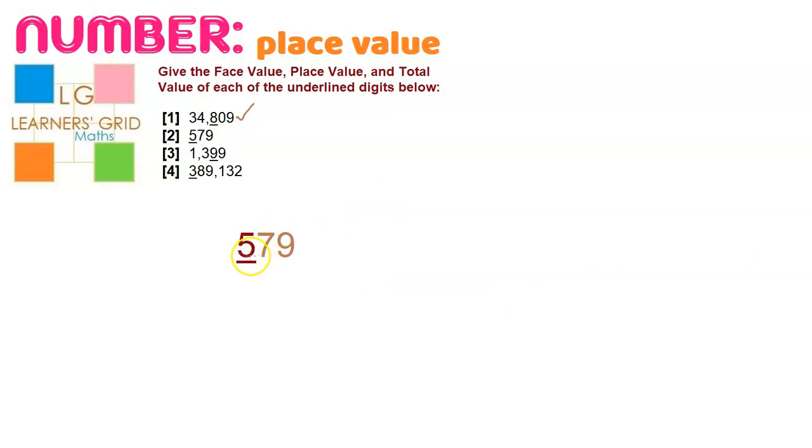So here's number two, 579. So again, simple really. Face value, place value, total value. So the face value of the underlined digit is 5. That's what it is when you look at it. The place value, this is the ones period. This is the ones place. This is the tens place. This is the hundreds place. So yeah, that place value is 100. If we want to do the total value, it's face value times place value. So 5 times 100 is 500. And that's number two done.